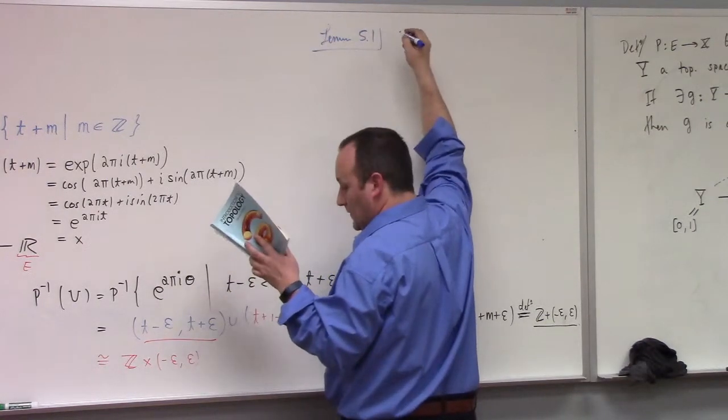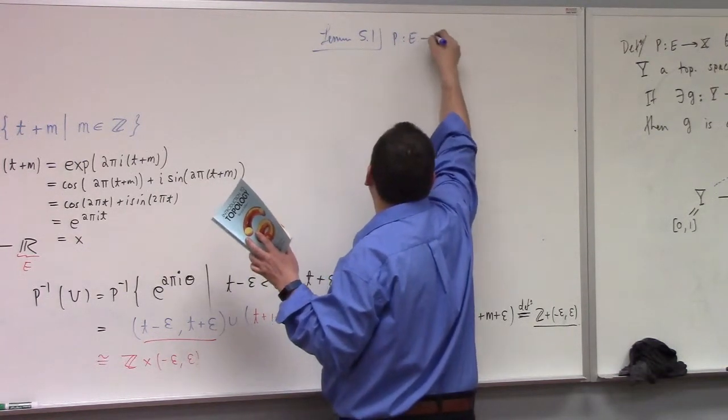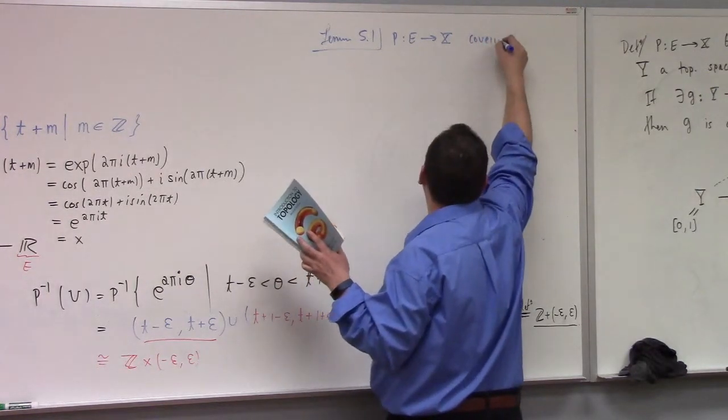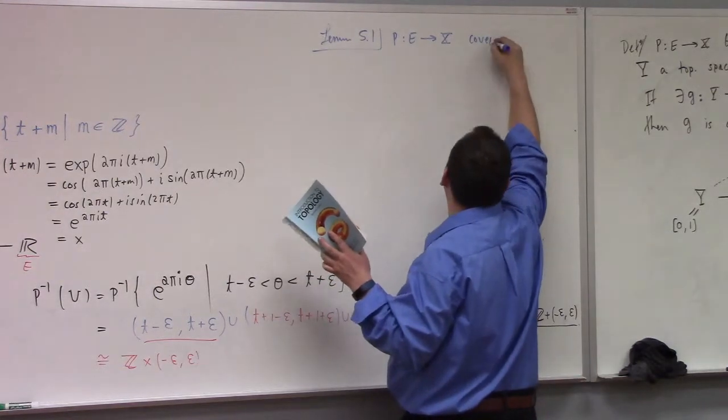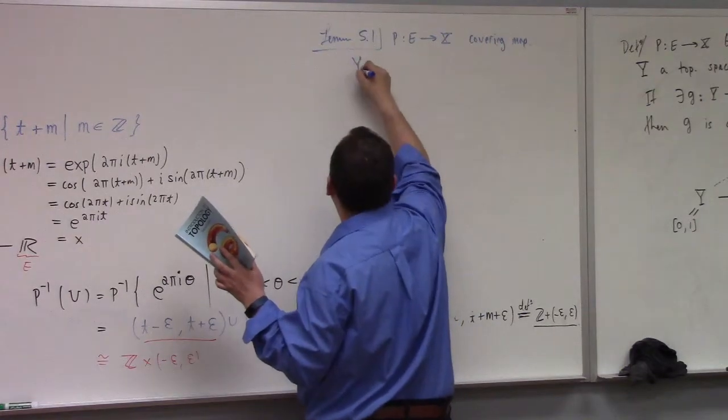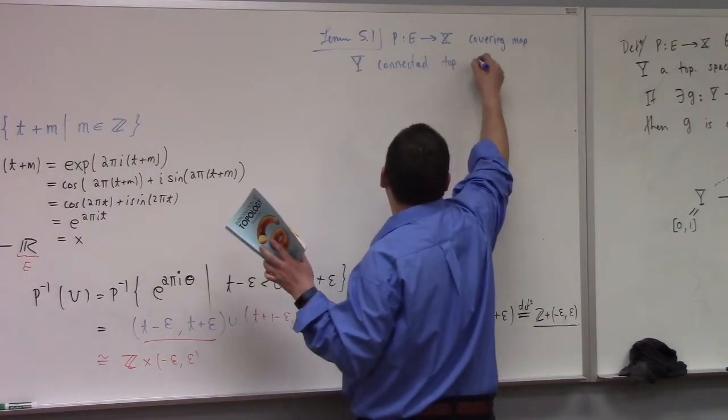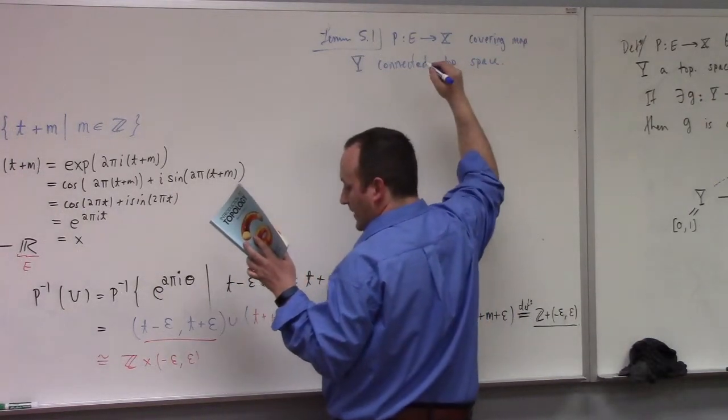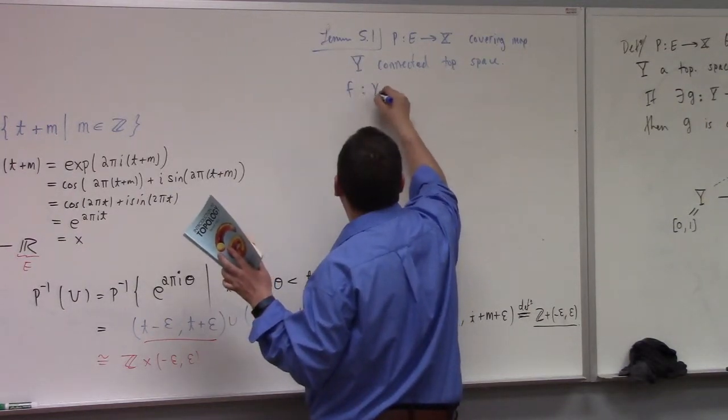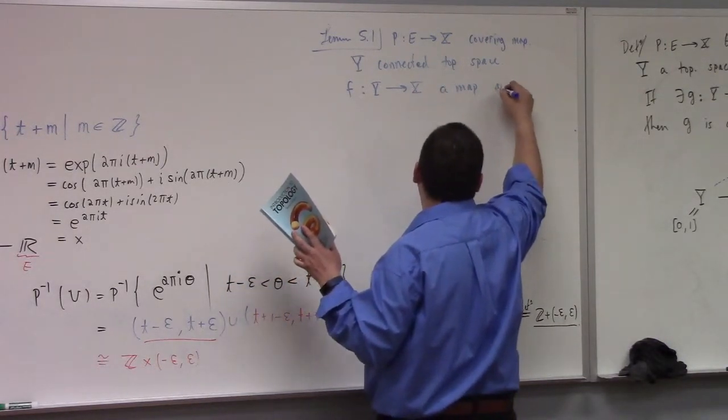Going through the details of these proofs will keep us from that for sure. It's still debatable whether we're going to get to it - I'm going to try though. Lemma 5.1: We have p going from E to X, a covering map, and Y a connected topological space, f a map.